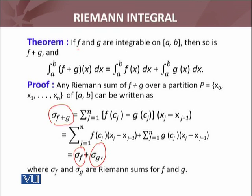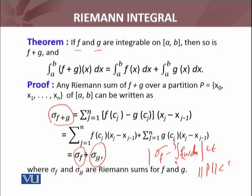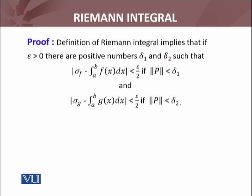Now, f and g are given to be integrable. It means that for each Riemann sum sigma_f, there exists a bound such that |sigma_f minus the integral from a to b of f(x) dx| is less than epsilon when the norm of P is less than delta. Similarly, this is true for g. The definition of the Riemann integral implies that if epsilon is greater than 0, there are positive numbers delta_1 and delta_2 such that these two inequalities hold.